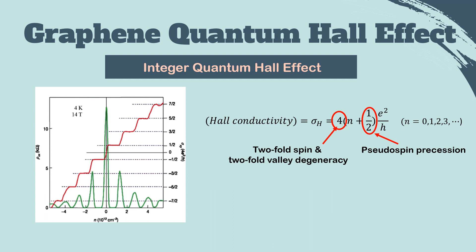By some successful experimental works and several theoretical attempts, the Hall conductivity of integer quantum Hall effect in graphene is established as follows: 4 multiple (n + 1/2) multiple e squared over h. Here, n is an integer including 0. The pre-factor 4 reflects the two-fold spin and two-fold valley degeneracy in the graphene band structure. The term 1/2 comes from the pseudo-spin precession when a particle exercises cyclotron motion.